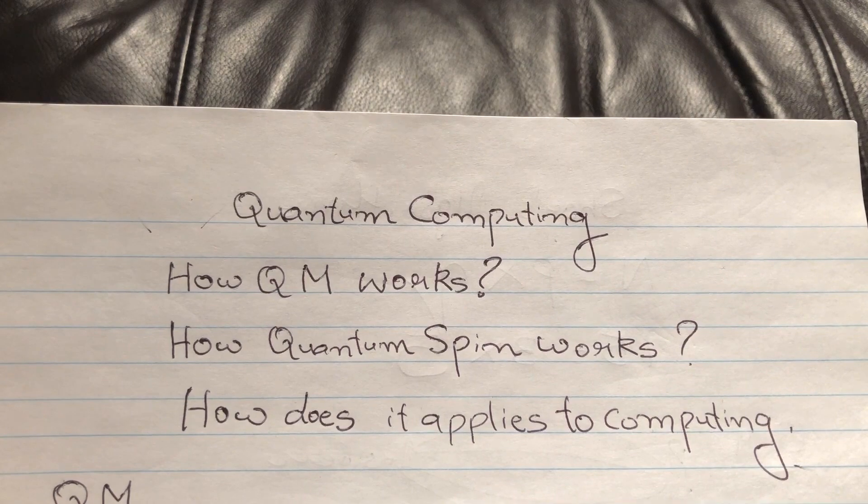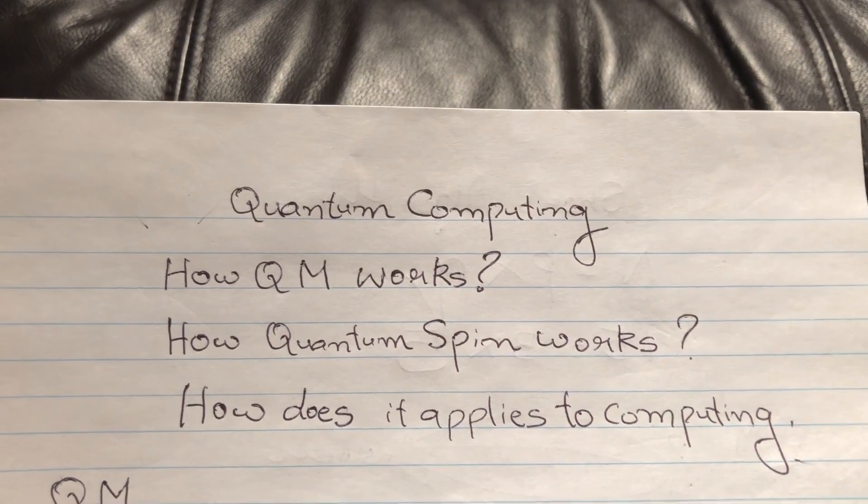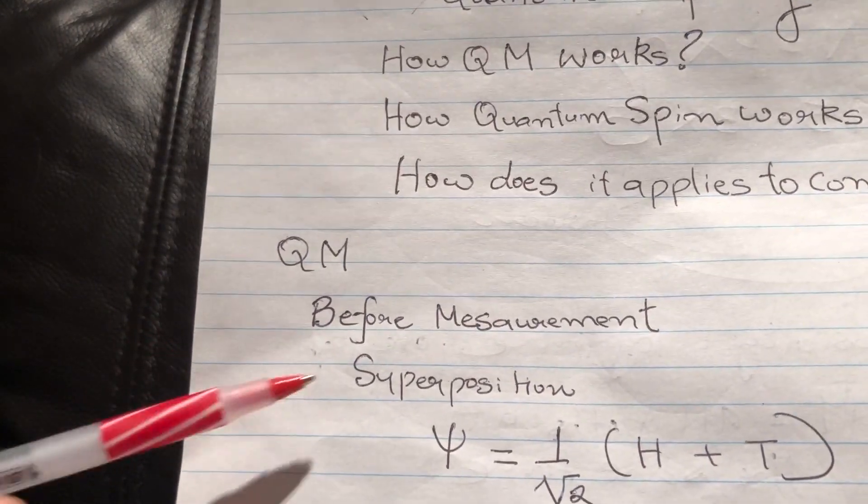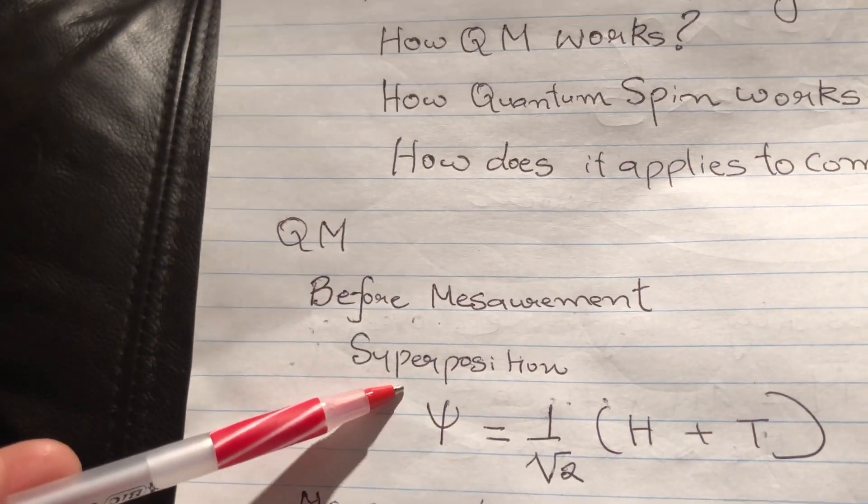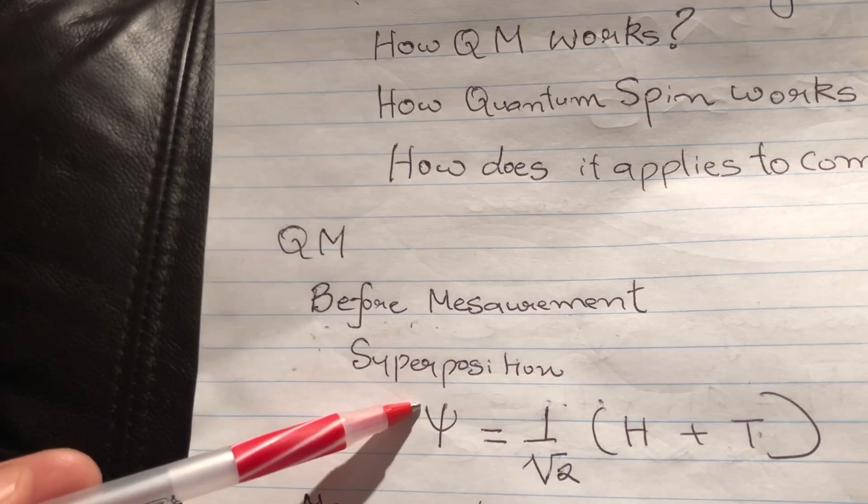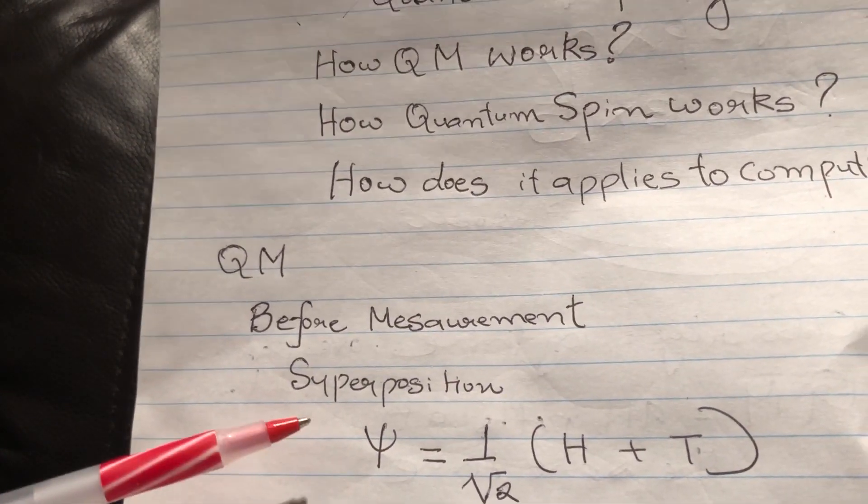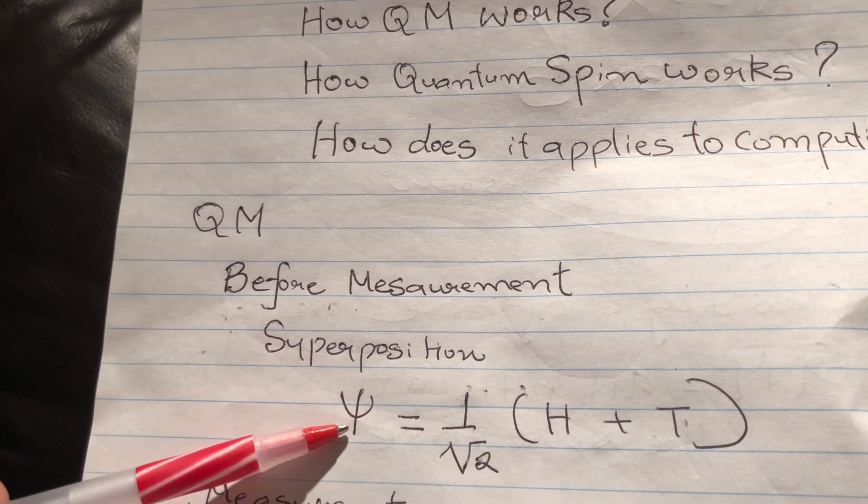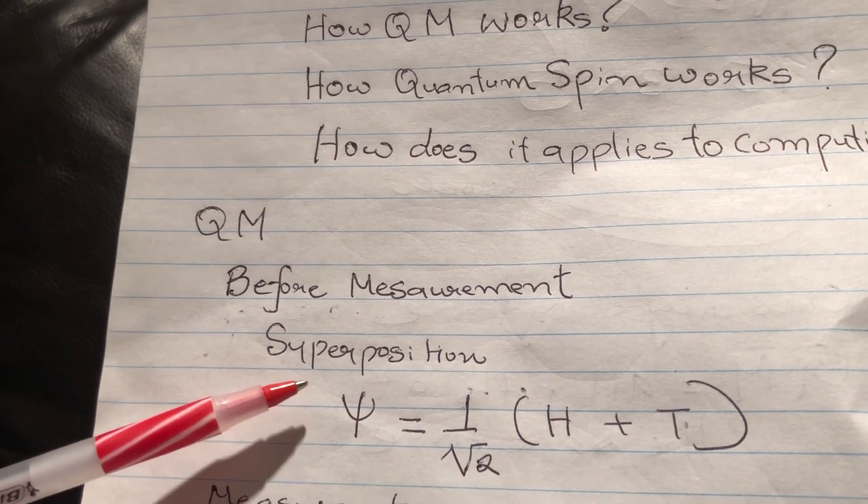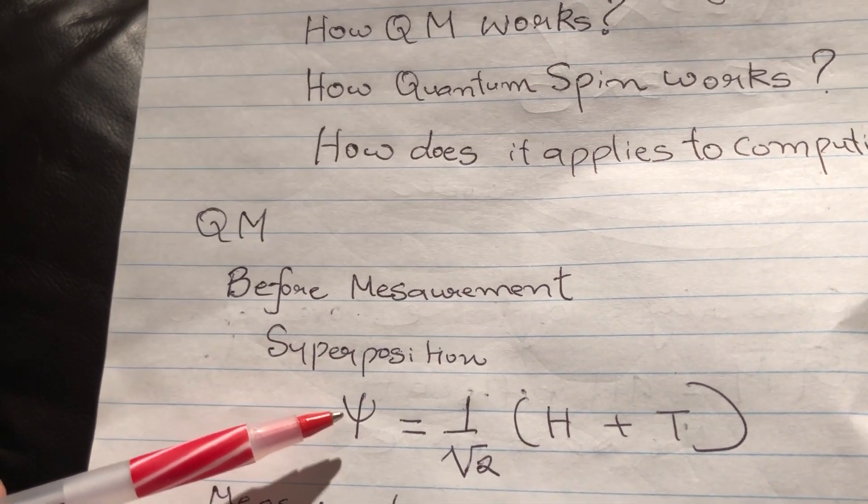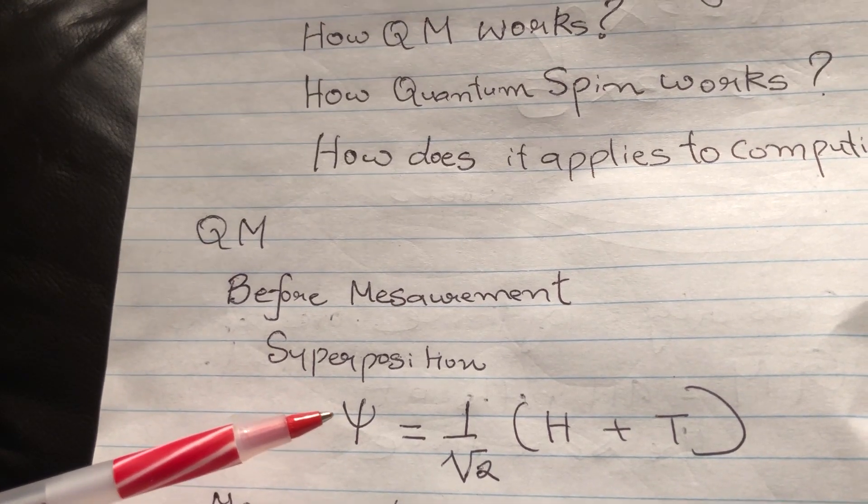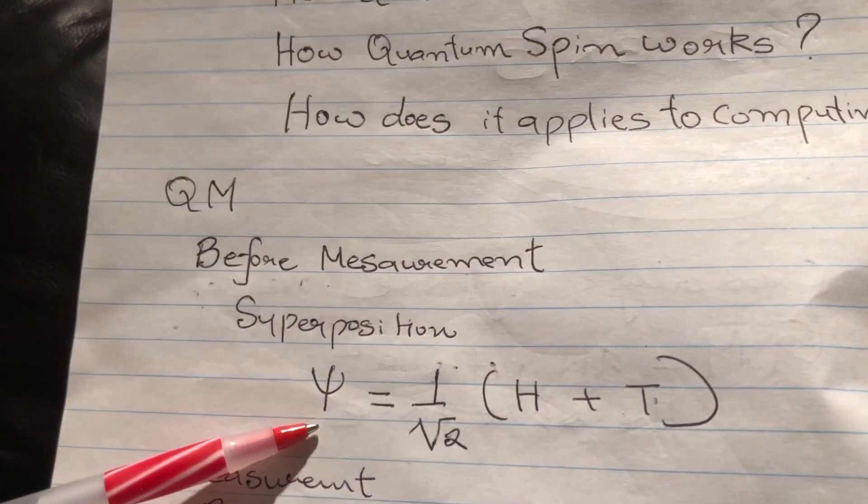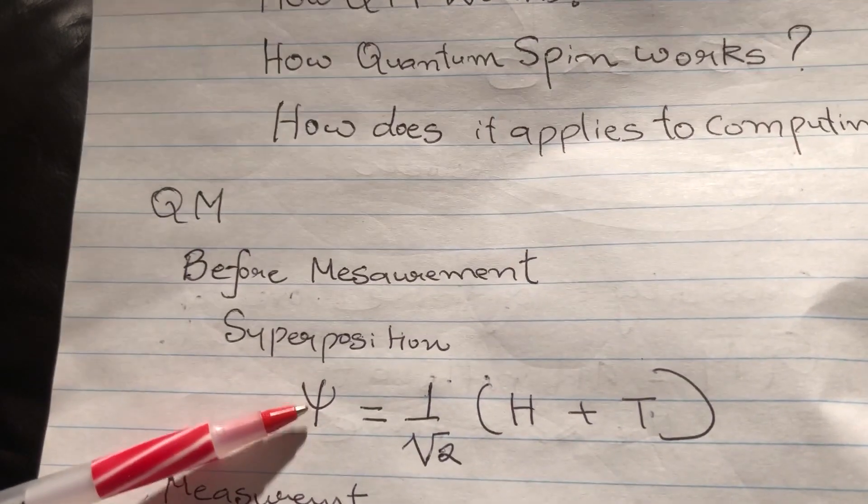So that at least we can see how it applies to quantum computing in a nutshell. How does quantum mechanics work? First of all, this is basically a wave theory, so all matter is described by wave function. Before measurement, the quantum state is in a superposition. What is a superposition? Superposition means if a quantum state has different choices that it can occupy, it occupies all the choices at the same time.